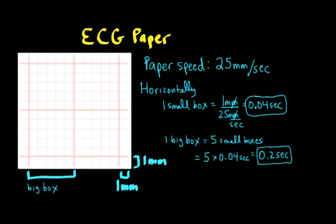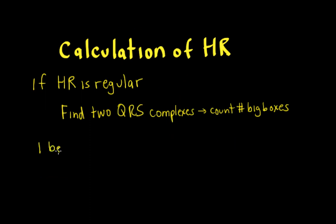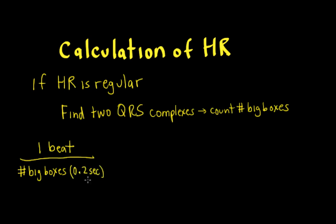Remember, the big box dimensions are defined by the dark grid lines — five small boxes — which makes up 0.2 seconds. So if we want to figure out heart rate, we have one beat in between the QRS complexes, and we divide by the number of big boxes, which are worth 0.2 seconds.